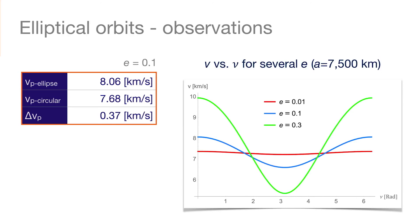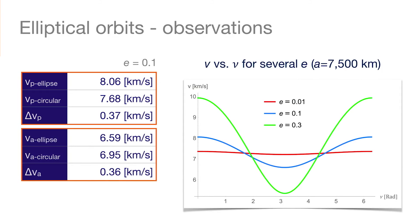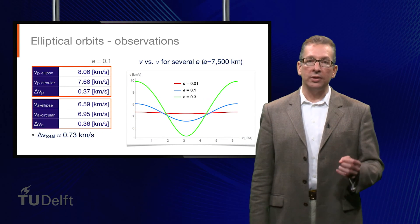Once we've done that, we consider the situation when our spacecraft arrives at apogee. And we can calculate that its speed, the speed that it has on the elliptical orbit at apogee, is 6.59 kilometers per second. And the speed it needs to have to be on a circular orbit at that same altitude is 6.95 kilometers per second. So when it gets to apogee, we need to change its velocity again. This time it requires a delta V of 0.36 kilometers per second. In other words, if we want to transfer from a lower circular orbit to a higher one, using an elliptical orbit that is just tangent to both, then we need two delta Vs, one at perigee and one at apogee. If we add these delta Vs up, then the total delta V required for this transfer maneuver is 0.73 kilometers per second.